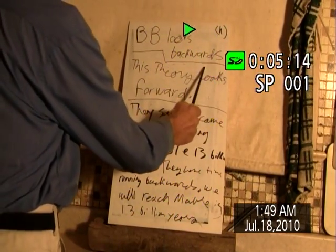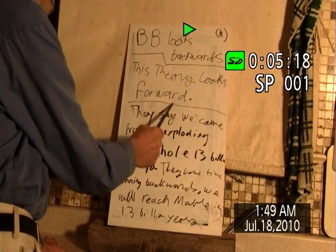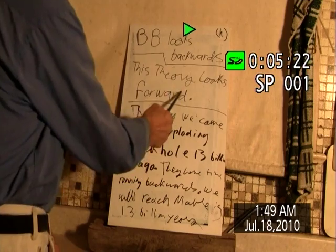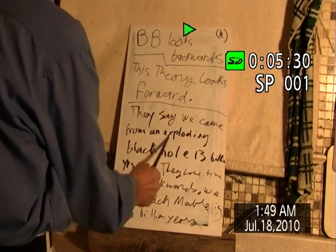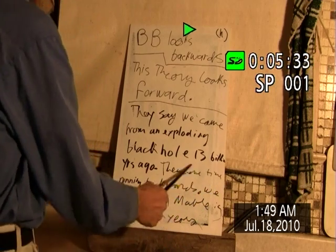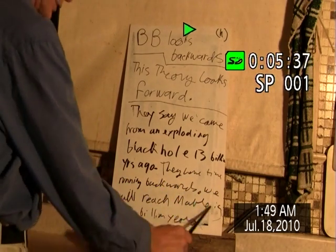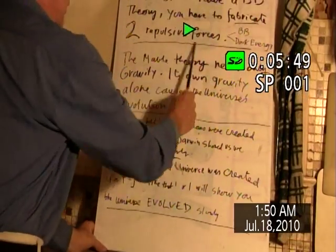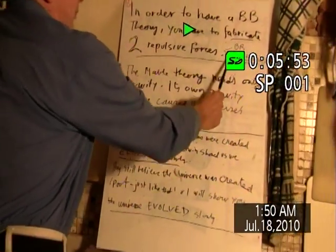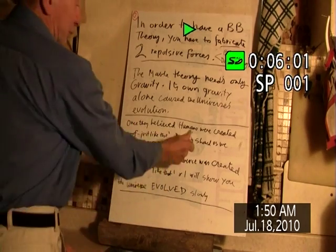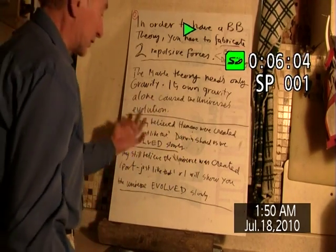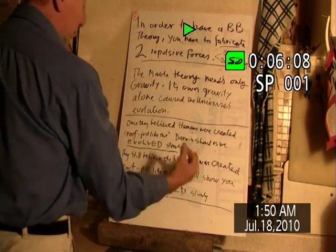The Big Bang Theory looks backwards, and this theory looks forward — this is the Mabel Theory. The Mabel Theory looks forward to the future. How many eyes are in the back of your head, and how many are in the front looking forward? What's more important, to look backwards or forward? They say we came from an exploding black hole 13 billion years ago — they have time running backwards. We will reach Mabel in 13 billion years. In order to have a Big Bang Theory, you have to fabricate two repulsive forces: Big Bang and dark energy. The Mabel Theory needs only gravity — its own gravity alone caused the universe's evolution. They used to believe humans were created just like that; Darwin showed us we evolved slowly. They still believe the universe was created just like that — I'll show you we evolved slowly.